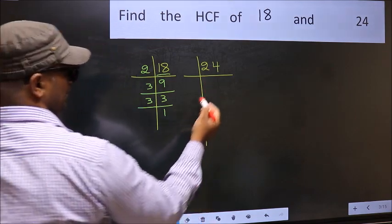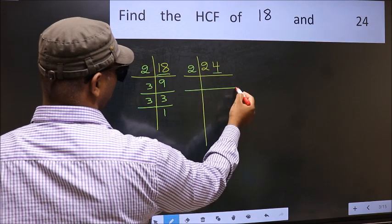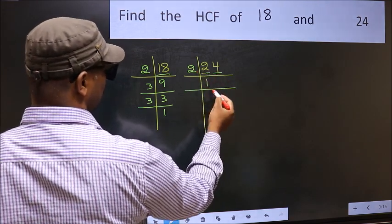Now the other number. Last digit is even, so take 2. First number 2. When do we get 2 in the 2 table? 2 times 1 is 2.